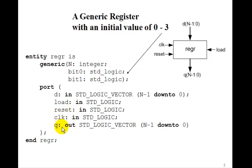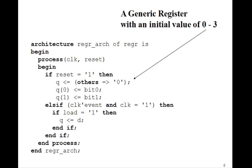So we have a reset in, and q is going to be out. This is very similar to the n-bit register we have. If reset equals 1, we'll first set all the q's to 0. And then because these are signal assignments, we can override them with q0 getting bit 0 and q1 getting bit 1. Else in the rising edge of the clock, if load is 1, q is d, as with the regular register.